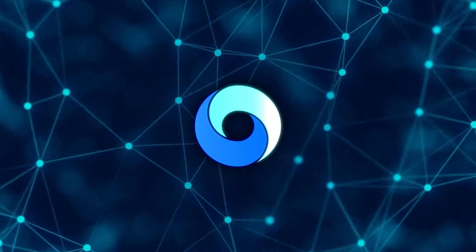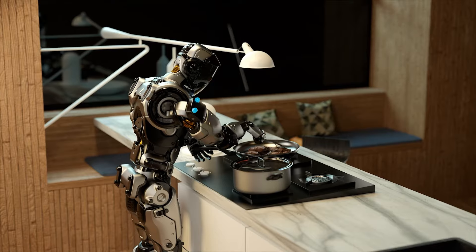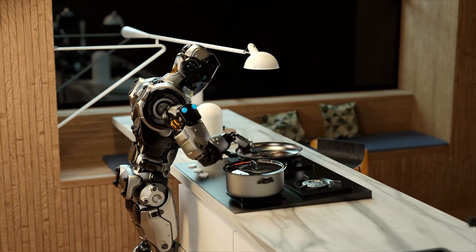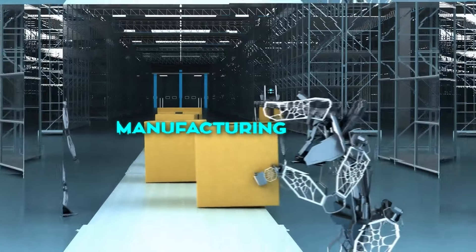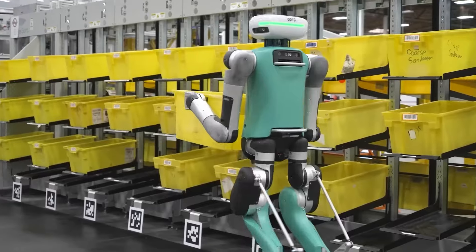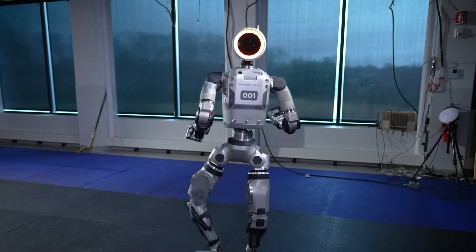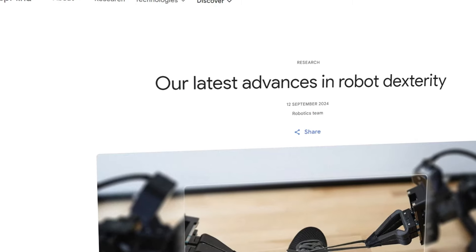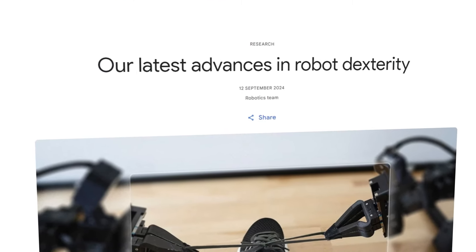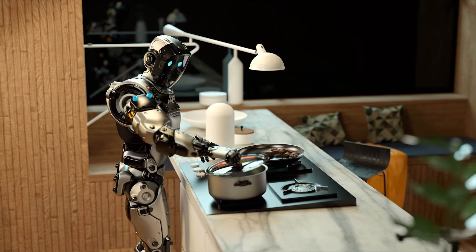These advancements aren't just theoretical. They have real-world implications that extend across multiple industries. Robots that can handle highly dexterous tasks will be transformative in manufacturing, healthcare, and even at home. In manufacturing, the ability to perform tasks like gear insertion, bolt tightening, and flexible object manipulation can streamline assembly lines and reduce errors. These tasks often require human workers due to their complexity, but with Aloha Unleashed and Demostart, robots are now capable of stepping in, increasing efficiency, and freeing up human workers for higher-level tasks.